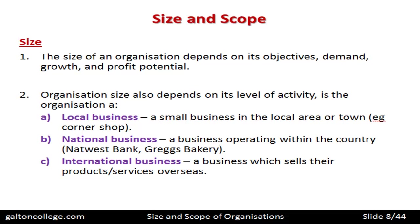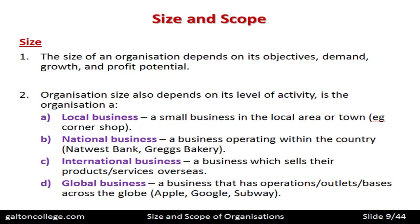Some businesses are very small, some are quite big, and some are very, very big. We could have a global business — one that has operations and outlets based across the globe. Many of the big names: McDonald's, Subway, Apple, Microsoft — many of those operate globally, in all countries.